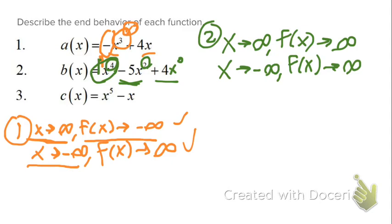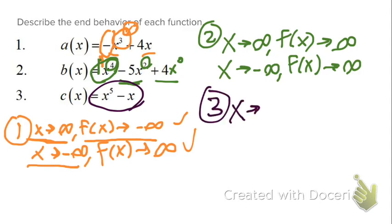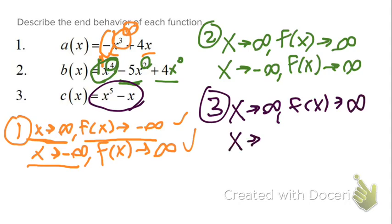Last but not least, we have example three. This is a fifth degree polynomial, so we're going to go in opposite directions. First, to see what's happening as x approaches infinity, you look at the leading coefficient. If there's no number in front of x to the fifth, then the leading coefficient is 1, which is positive, so the graph is going to rise to the right. And it's going to fall to the left. So as x approaches negative infinity, f of x will approach negative infinity because the degree is odd — it's a fifth degree polynomial.